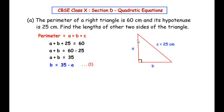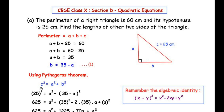Since we have a right-angled triangle, we apply Pythagoras' theorem: c² = a² + b². Substituting c = 25 and b = 35 − a, we get 25² = a² + (35 − a)². We expand (35 − a)² using the identity (x − y)² = x² − 2xy + y², giving us 625 = a² + 35² − 2(35)(a) + a².